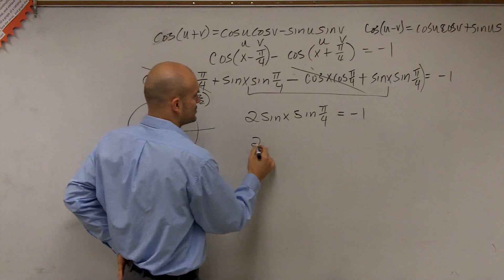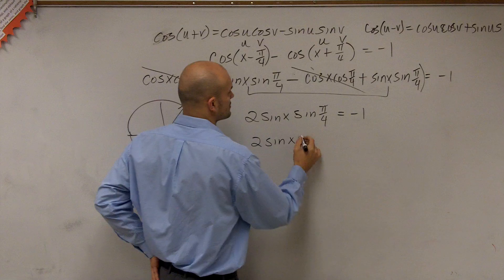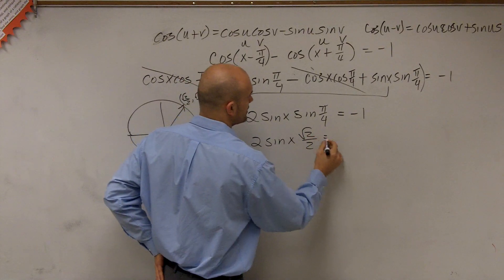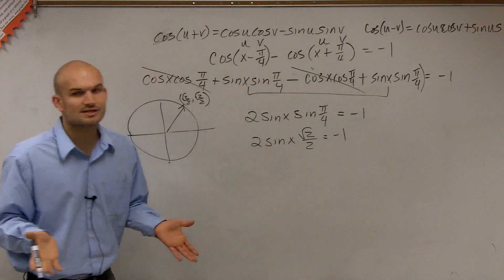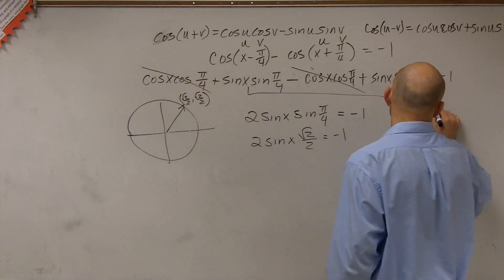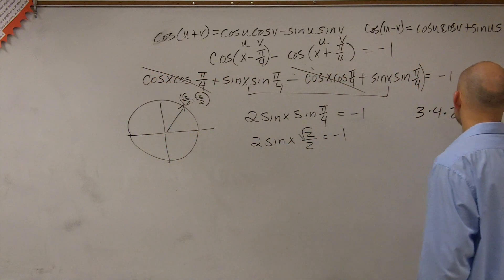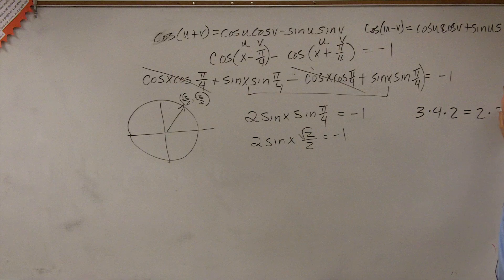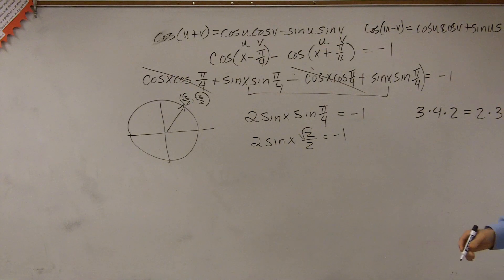So we have 2 sine of x square root of 2 over 2 equals negative 1. Now, this one gets students pretty confused, all right? But remember this, guys. 3 times 4 times 2, is that equal to 2 times 3 times 4? Is that the same? Yeah.